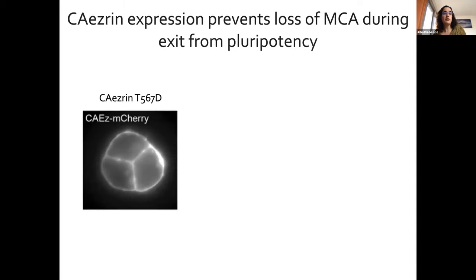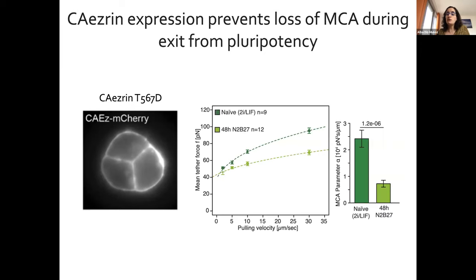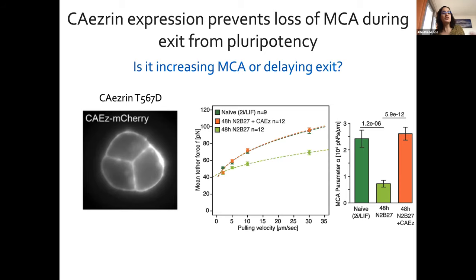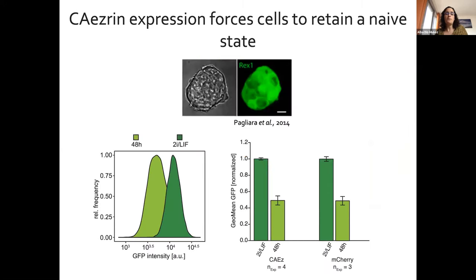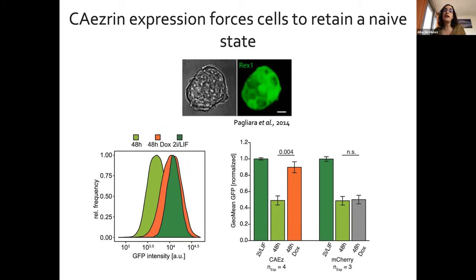We generated a stable cell line expressing constitutively active ezrin in mouse embryonic stem cells. We measured membrane-to-cortex attachment and confirmed that overexpressing constitutively active ezrin keeps membrane-to-cortex attachment very high. But that still doesn't answer whether it's just changing mechanics or actually affecting fate. We used a canonical naive marker called REX1, expressed as GFP. Normally during the naive-to-prime transition, GFP drops to about half. But when we overexpress constitutively active ezrin, even after 48 hours of exit, cells still retain very high levels of REX1 protein — which is not seen with an mCherry control.